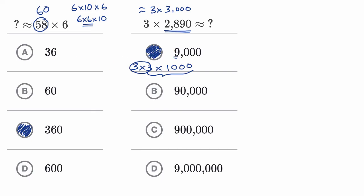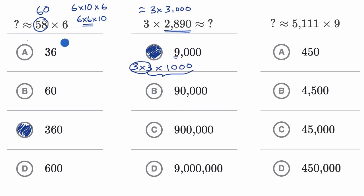Let's do one more example. This is going to involve fairly large numbers. If you had to estimate 5,111 times 9, which of these would you pick? Pause the video and answer that.